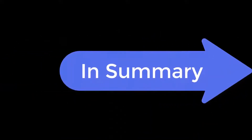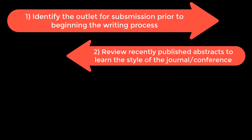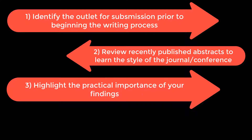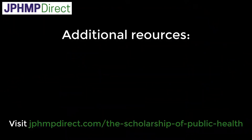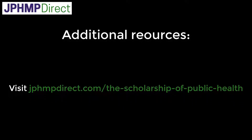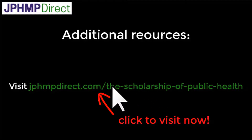So in summary: identify the outlet for submission prior to beginning the writing process; review recently published abstracts to learn the style of the journal or conference; highlight the practical importance of your findings; and write the abstract last. That concludes this tutorial for how to write an abstract. For additional resources and more from this column series by Dr. Justin Moore, please visit the following link. Thanks, see you again.